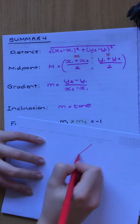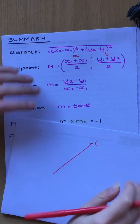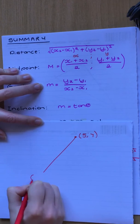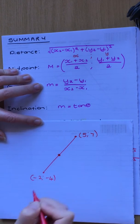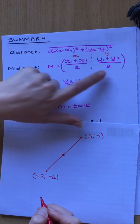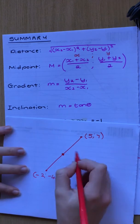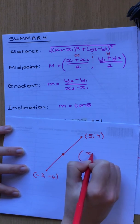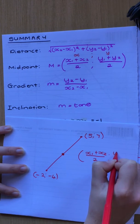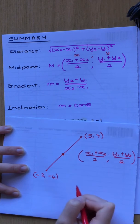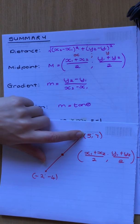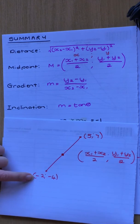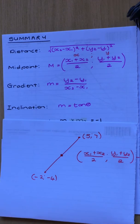If this is my line, let's say this is the point 5 and 7, and this is negative 2 and negative 4, your midpoint will be a point that is halfway through that line. You choose one of the coordinates to be 1 and one to be 2 — it doesn't matter which. But if you choose this as x1, that will be y1. You just stick with whichever point you labelled.